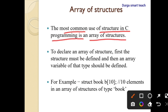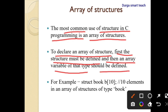The most common use of structure in C programming is an array of structure, which is very important. To declare an array of structure, first the structure must be defined, and then an array variable of that type should be defined. For example, 'struct book b[10]' declares 10 elements in an array of structure of type book — it stores 10 book details.